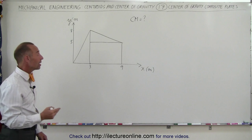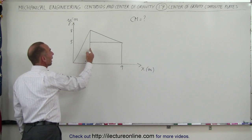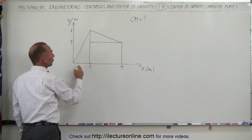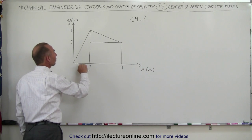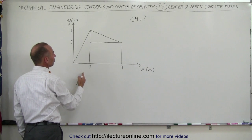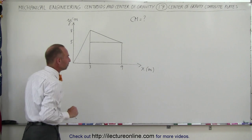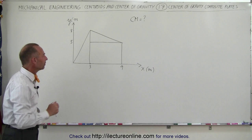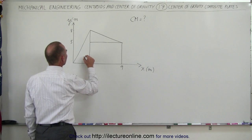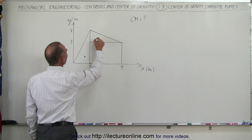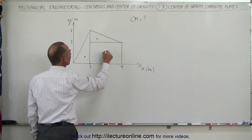Remember, with triangles the center of mass is always one-third from the base up. So for the y-direction it would be one-third the distance from 0 to 8, and the x-direction would be one-third the distance from 3 to 0. The center of mass of this triangle would be about here, the center of mass of this triangle would be about here, and the center of mass of the rectangle would be about there.